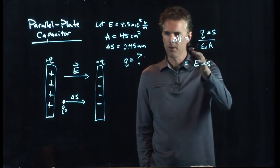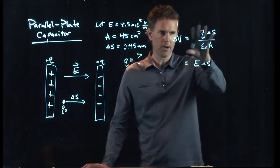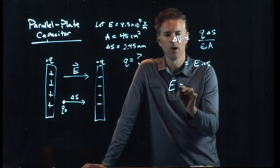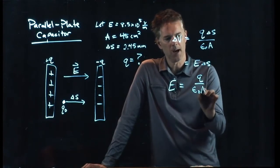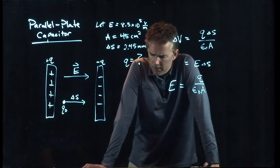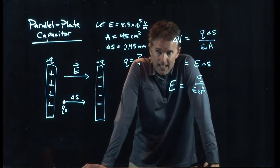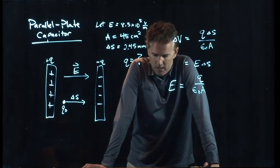So in this problem, we don't really care about delta V. What we do care about is the other stuff. E was Q over epsilon naught times A. So it almost looks like we don't even need the delta S. Okay. All right.